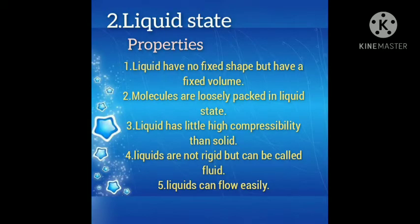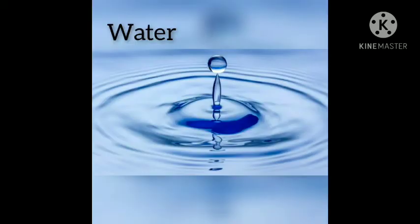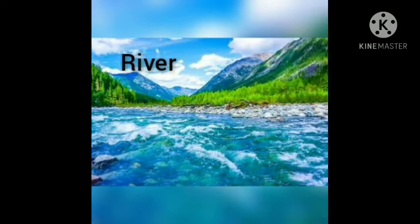Liquid state properties: liquid has no definite shape but a fixed volume. Molecules are loosely packed in the liquid state. It has slightly higher compressibility than the solid state. It is not rigid but can be called fluid and can flow easily. The best example for liquid is water. Water has no definite shape but has a fixed volume. In a river, water can flow easily and is not rigid.